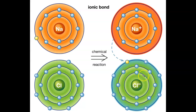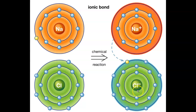Over here, chlorine has gained an electron. Electrons have negative charges, so it has one more negative charge than it used to, so it's charged negative one, which can be abbreviated with just one minus sign. Now these two things are oppositely charged — the sodium ion is positively charged, the chlorine ion is negatively charged. And things that are oppositely charged attract, and that's what creates the ionic bond.